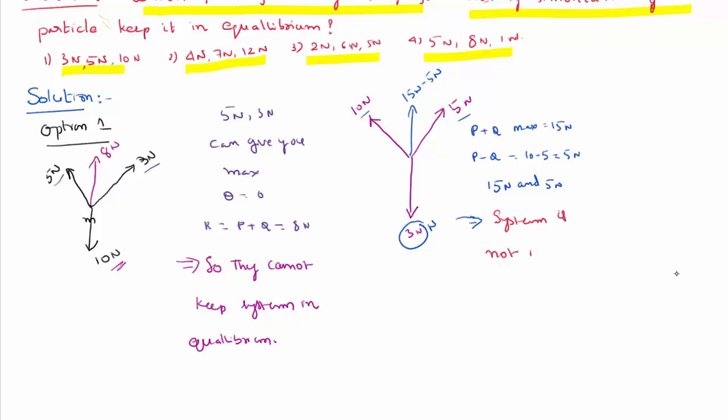Like that we need to check each of the options. Let us see this option: 4 and 7 can give you at the best 11, the other force is 12 Newton. Therefore, 11 cannot compensate 12, so they cannot keep the system in equilibrium.